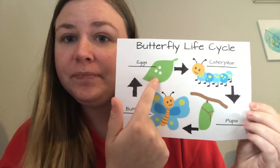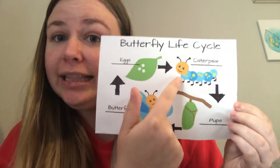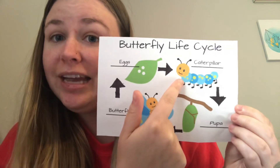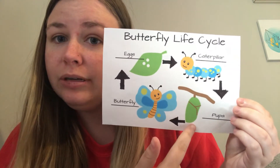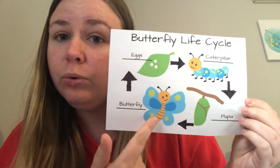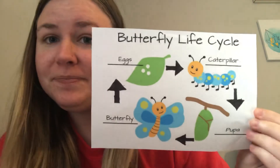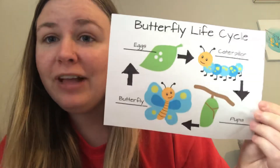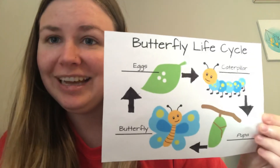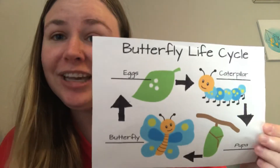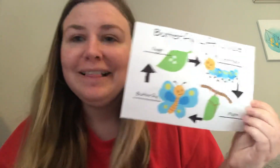And it keeps going — first the eggs, then the caterpillar, then the caterpillar makes a cocoon and comes out and becomes a butterfly. And that's how a butterfly becomes a butterfly. Then the butterfly has eggs and it starts all over again. So that's the life cycle of a butterfly. It's really cool. Bye!